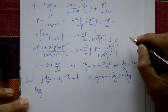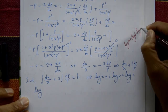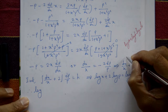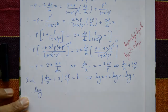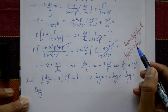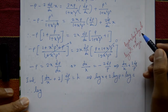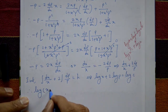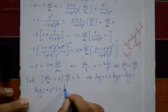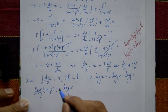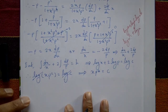Integration gives log x plus 2 log p equals log c, where c is the integral constant. Using log properties: log a plus log b equals log ab, and 2 log p equals log p squared. Therefore log x plus log p squared equals log c, which gives log(xp²) equals log c. Cancelling log on both sides, xp squared equals c.